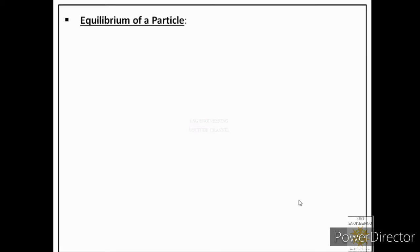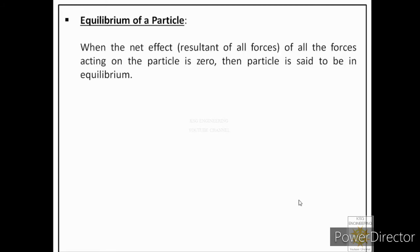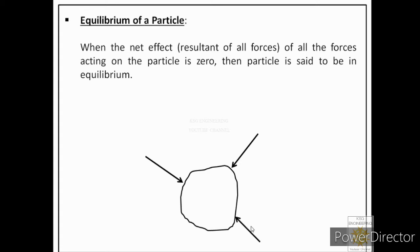Let us first see the definition of equilibrium of a particle. When the net effect, that is the resultant of all the forces acting on the particle, is zero, then the particle is said to be in equilibrium. Suppose on this body three forces are acting and if the resultant of all these three forces is zero, that means the state of motion of the body remains unchanged, then we can say this body is in equilibrium.